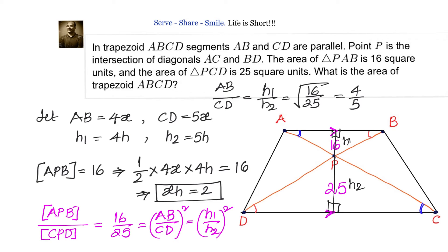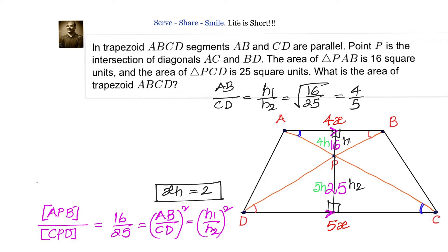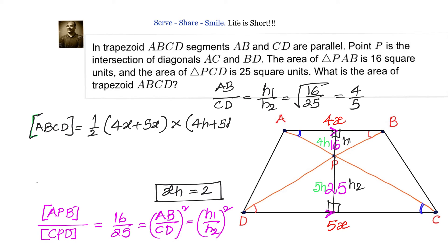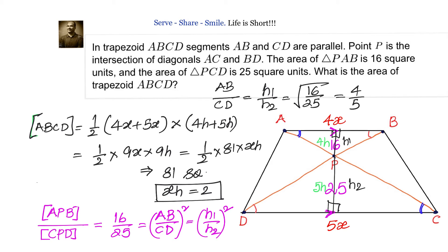Now let us calculate the area of trapezium ABCD. Area of trapezium = ½ × (sum of parallel sides) × (distance between parallel sides) = ½ × (4X + 5X) × (4H + 5H) = ½ × 9X × 9H = ½ × 81 × XH. Since XH = 2, we get 81 square units. So the area of trapezoid ABCD is 81 square units.